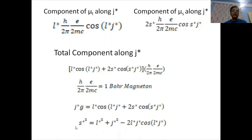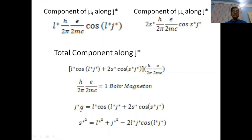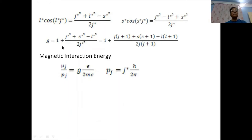Applying the triangle law between S*, L*, and J*: S*² = L*² + J*² − 2L*J* cos(L*,J*). Similarly: L* cos(L*,J*) = (J*² + L*² − S*²)/(2J*) and S* cos(S*,J*) = (J*² − L*² + S*²)/(2J*). Substituting back and solving for g: g = 1 + (J*² + S*² − L*²)/(2J*²), which on decomposition gives: g = 1 + [j(j+1) + s(s+1) − l(l+1)] / [2j(j+1)]. This is the Landé g-factor formula.